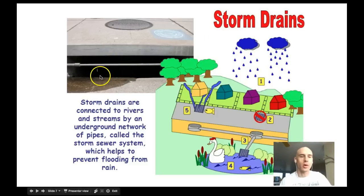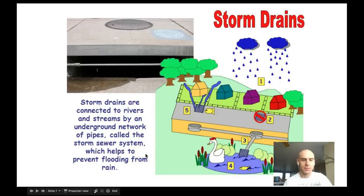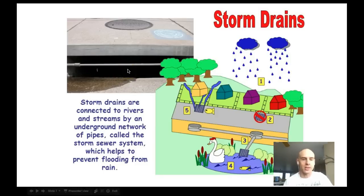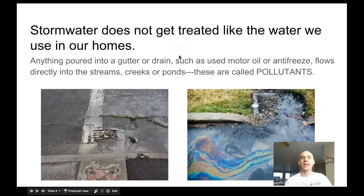Storm drains - you see these along the curbs in every neighborhood. Storm drains are connected to rivers and streams by an underground network of pipes called a storm sewer system, which helps prevent flooding from rain. When a lot of rain comes through, the streets flow with water. Without storm drains, that water would just build up into raging rivers in your streets, but it drains down into the storm sewer and goes into the stream.